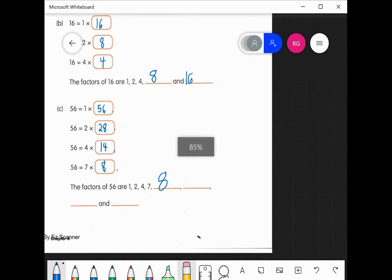Alright, so we are finishing off on page 88. We're here writing the factors of 56. We have 1, 2, 4, 7, 8, and the next ones are going to be here. So we have 14, 28, and 56. Those are the factors of 56.